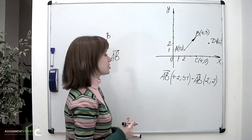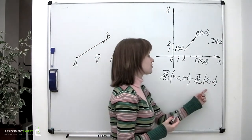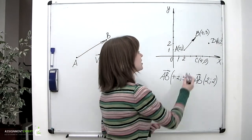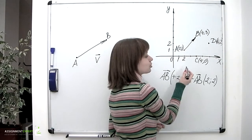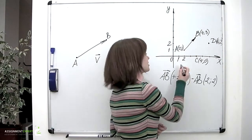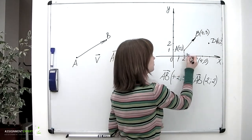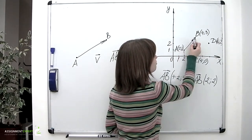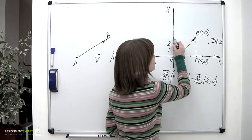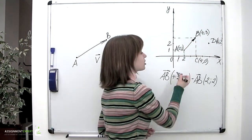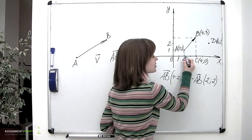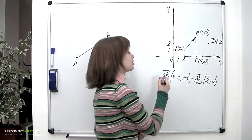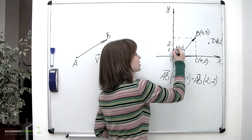Now you can notice that the coordinates of the vector are nothing else than its projections onto the coordinate axes. By common agreement, first comes the projection of the vector onto the x-axis, and then comes the projection onto the y-axis.